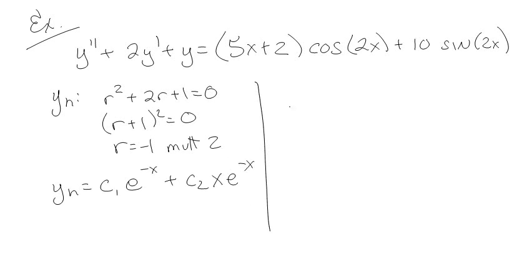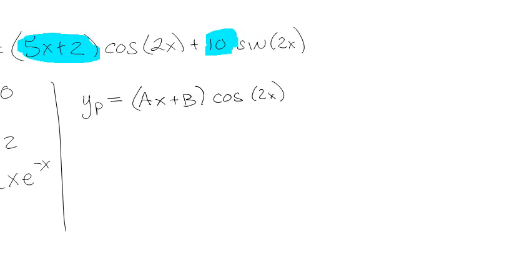Now before guessing my particular solution, first I want to see: are cosine and sine of 2x over here? And the answer is no, so I'm good. I don't have to worry about adding any extra x's. Now the highest degree, this is a first degree polynomial, this is a zeroth degree polynomial. So I need to guess ax plus b for the cosine of 2x, and then cx plus d for the sine of 2x. You want to match the degree of the highest polynomial on both of them.